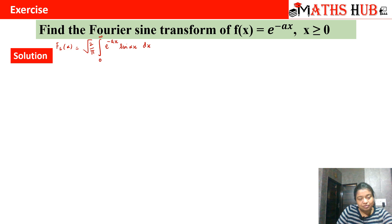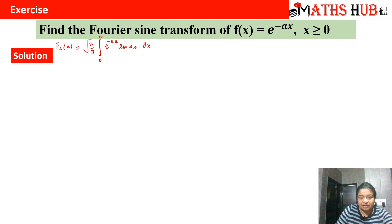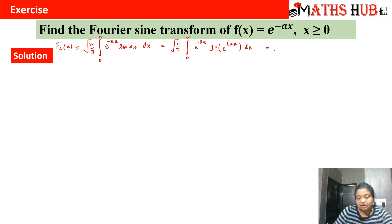As discussed in previous videos, whenever we have sinusoidal functions — cos and sine — we can express them as the real or imaginary part of e^(iθ). So we write sin(αx) as the imaginary part of e^(iαx). We can take the imaginary part outside and club the exponential terms, giving e^(−(a − iα)x).